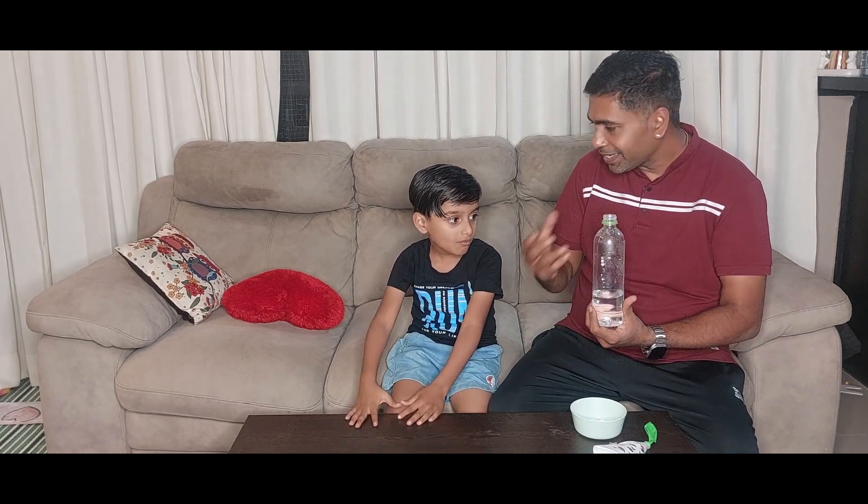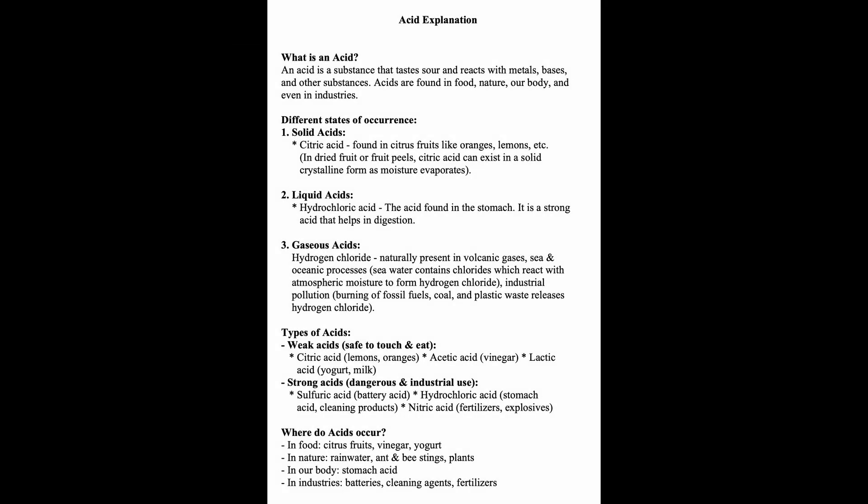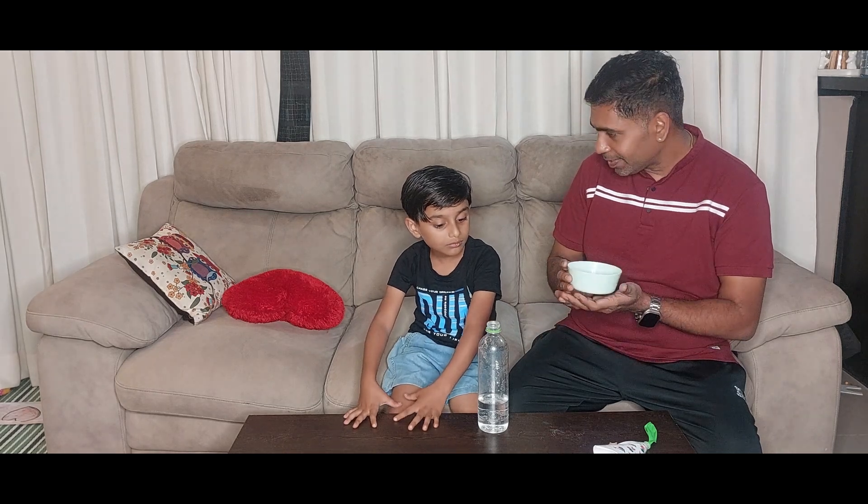Now, what is an acid and how does it occur in nature? I will explain everything in detail. Likewise, what is a base and how does it occur in nature? I will explain this as well. The result when you mix the acid and the base — we get carbon dioxide.